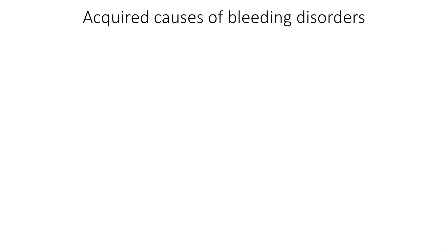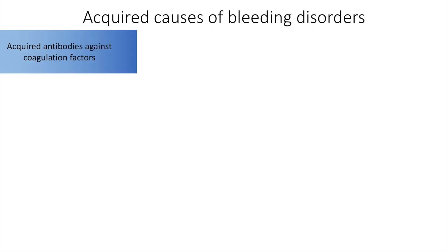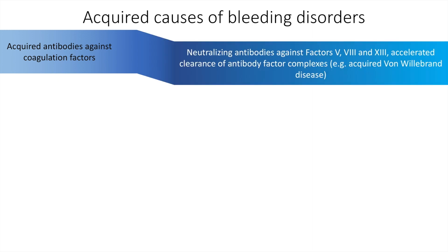Continuing with acquired causes, there are acquired antibodies against coagulation factors. This is seen in patients receiving factor 8 or 9 for hemophilias, and there may be accelerated clearance of antibody-factor complexes as seen in acquired von Willebrand's disease.